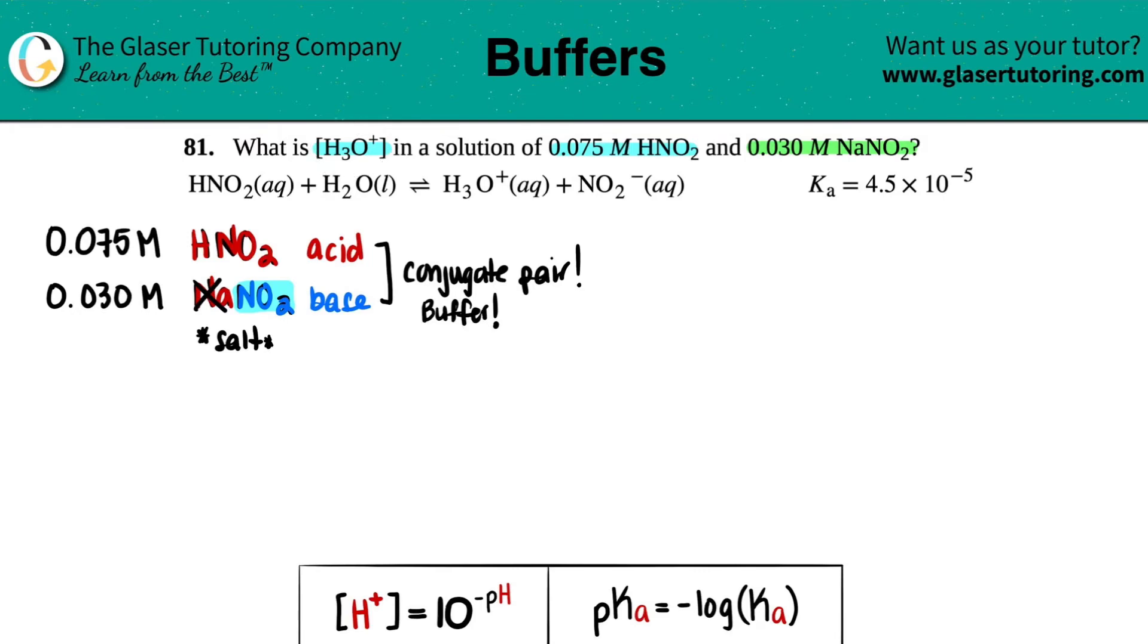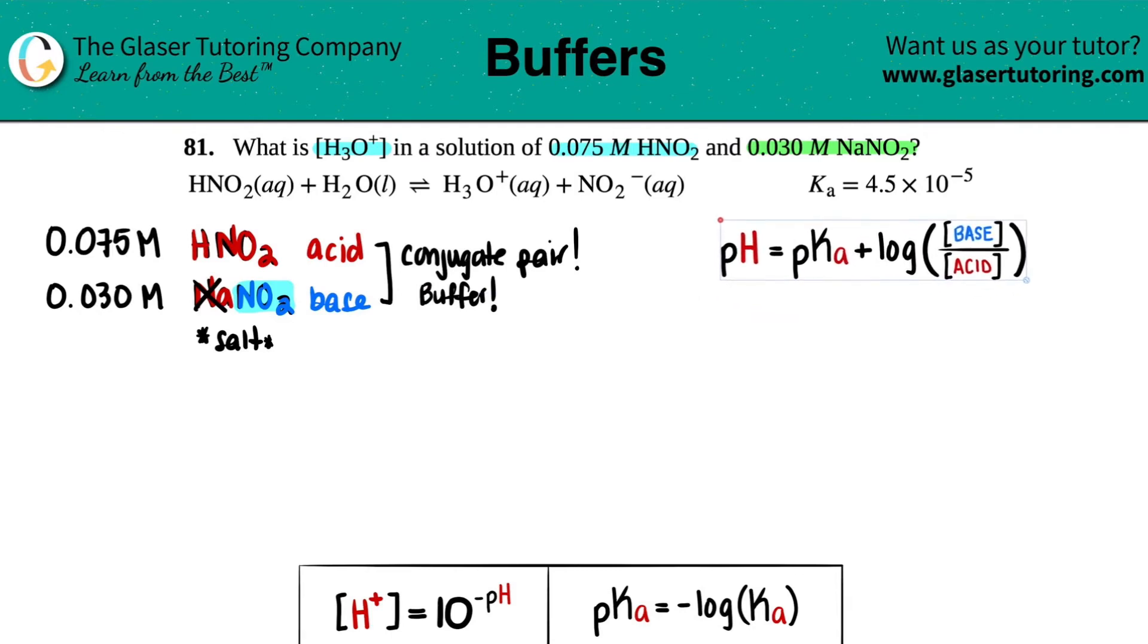And when you have a buffer solution, especially if they're asking for acidic components, the easiest way to answer this question is to use the Henderson-Hasselbalch equation. And the Henderson-Hasselbalch equation is this one right here. And I'll put that over here. pH equals pKa plus the log of the concentration of the base divided by the acid. And it's a good thing that we identified which one is the base and which one is the acid.